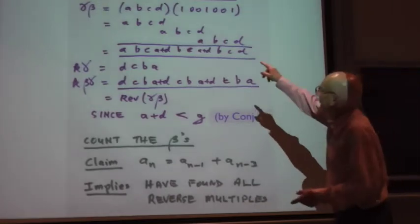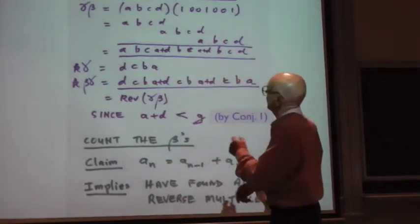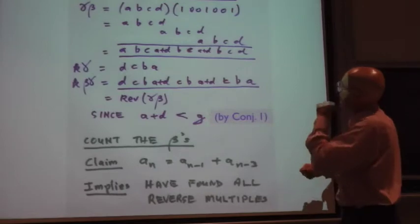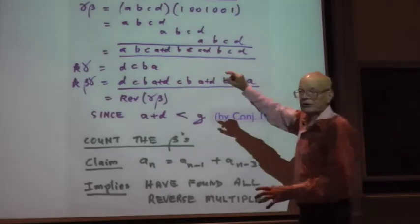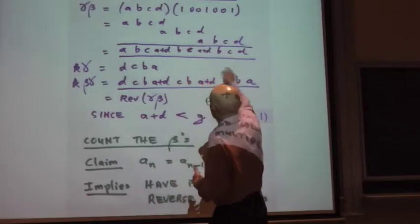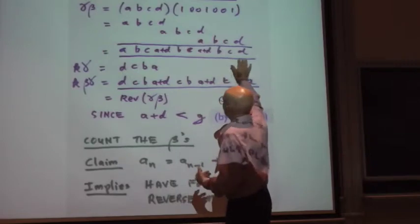And you prove that by just doing the long multiplication table. So there's beta, and gamma, I'm assuming is something, let me write it as ABCD. In this case, it's a four-digit number, which is on the previous slide. Now, when you do the long multiplication, you get ABCD, ABCD, and ABCD. You add them up, and you get ABC, A plus D, BC, A plus D, BCD.